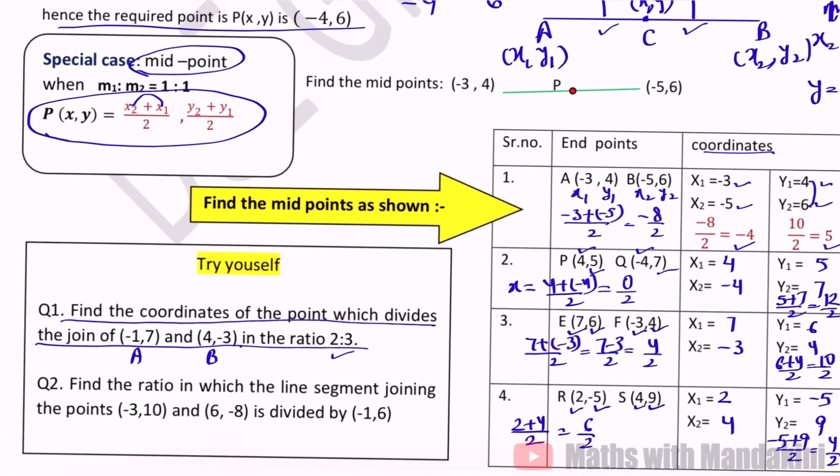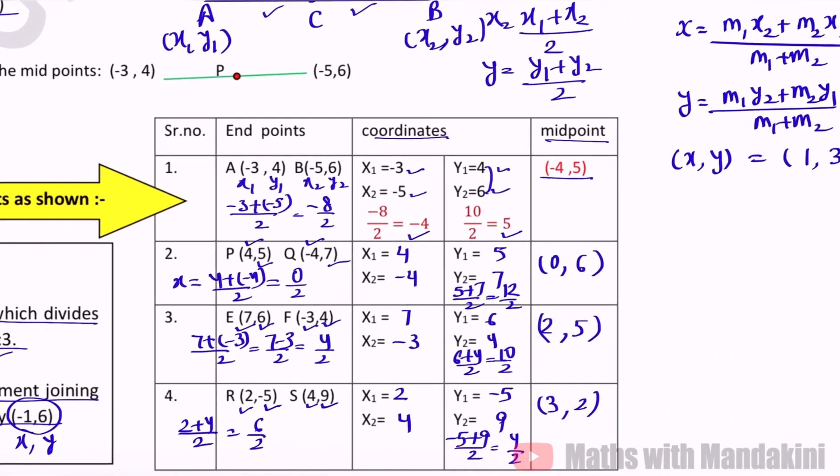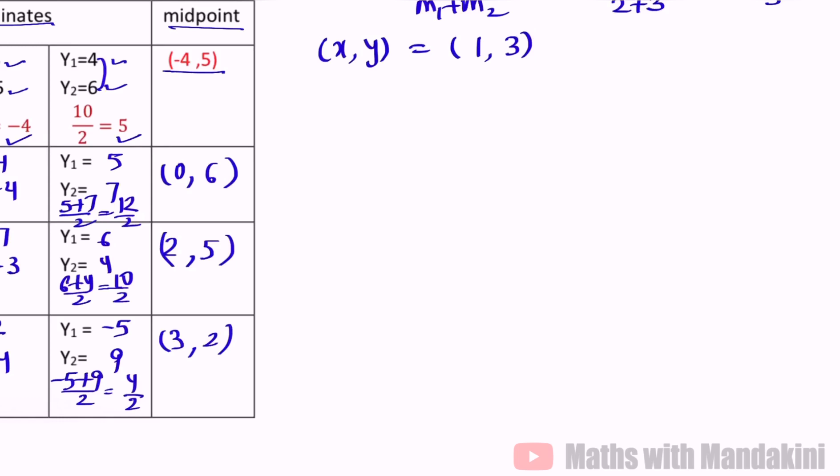Next question hai find the ratio. This time ratio nikalna hai. In which the line segment joining the points is divided by the point (-1,6). So now we have that point given whose coordinates we need to find. Yaani x, y is given to us. M1 is to M2 we need to find. Answer is given: (-3,10) and (6,-8). This is our x1, y1, this is x2, this is y2. And the point which is dividing is (-1,6). That is our x, y. And ratio we need to find. Yaani M1 is to M2 we need to find.